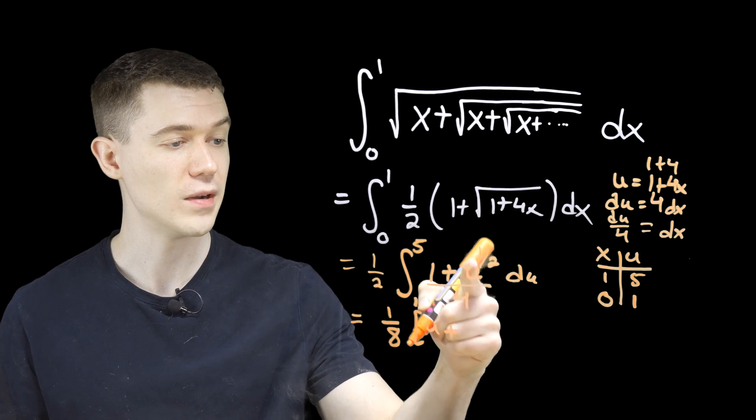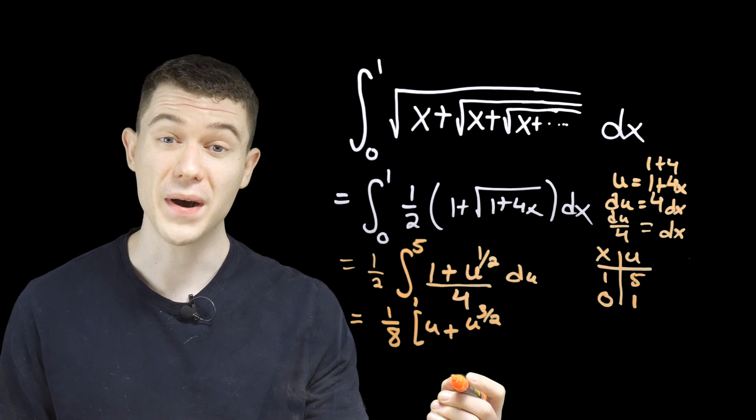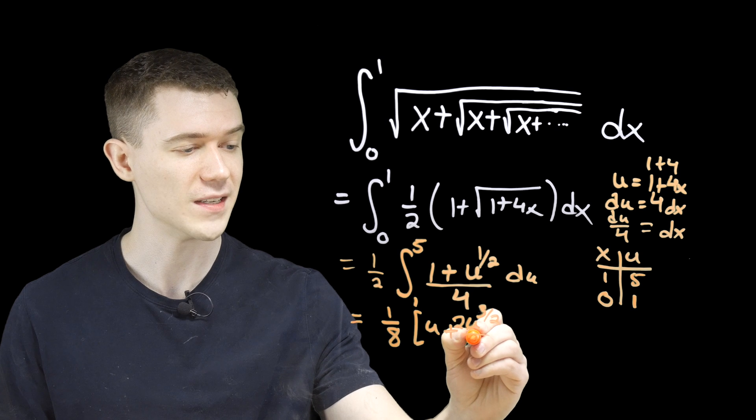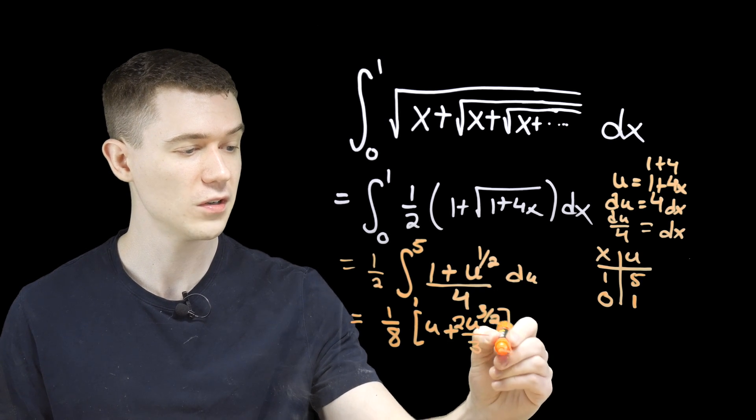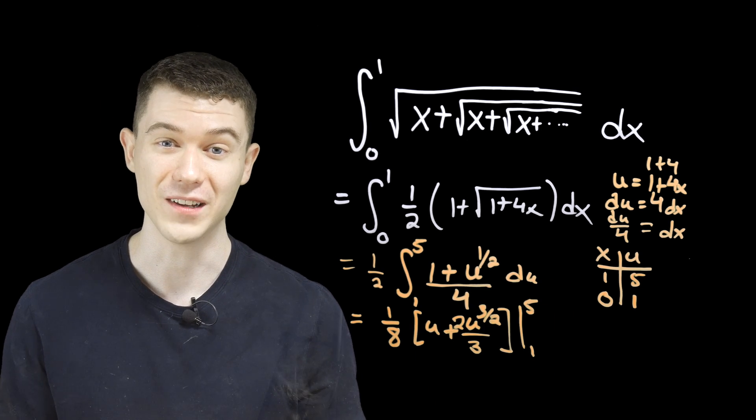The anti-derivative of u to the one half should be u to the three halves. Divide by three halves. We divide by the new power. Dividing by three halves is the same as multiplying by two thirds. And then we evaluate from one to five using that fundamental theorem of calculus.